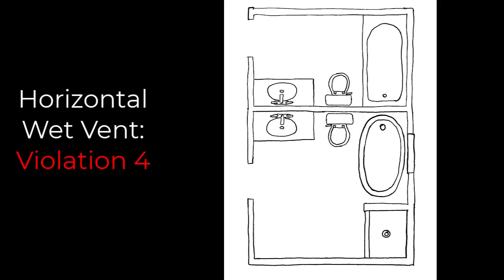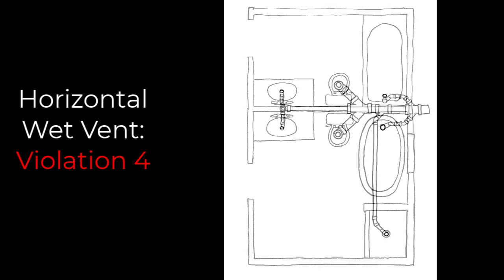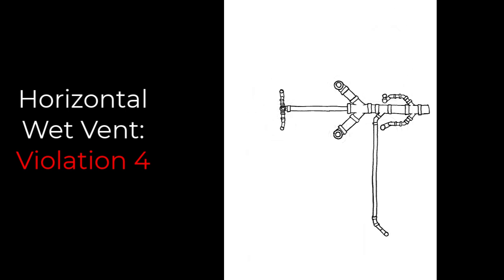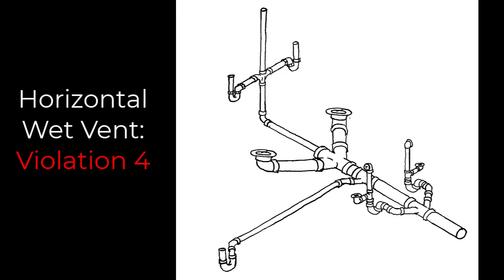Horizontal wet vent violation four: we have two bathroom groups back to back. The bottom one is a master bathroom with a shower in the lower right corner. The violation is that trying to catch all those fixtures exceeds the maximum number of fixtures — two bathroom groups or 12 drainage fixture units. You can see we've branched off and tried to connect that shower into our double wet vented bathroom group. The maximum we can have are two lavs, two toilets, and two tubs.